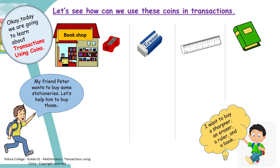He needs a sharpener. Look at here — this is the price of a sharpener. Children, when we buy or purchase something, we need to pay for that. We pay for its price. How do we state the price of this sharpener? We can state it as 1 rupee. That means 1 rupee is the price of this sharpener. Now look at the next one — he needs an eraser also. What's the price of it? Yes, it's 2 rupees.